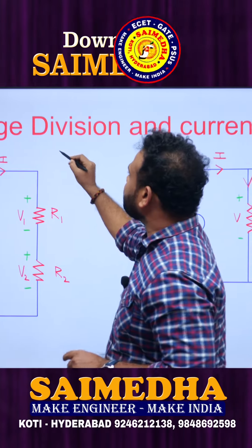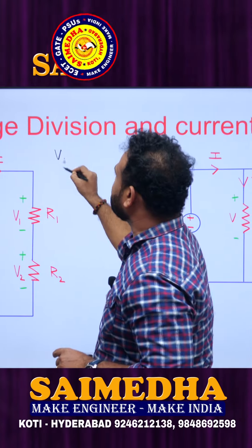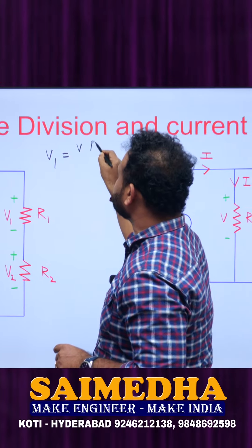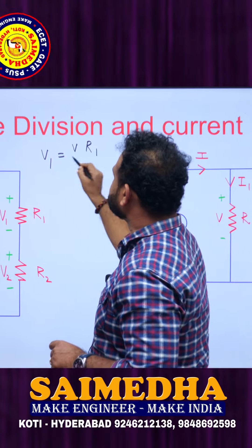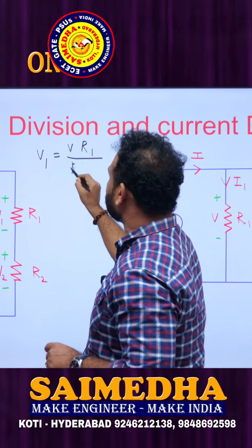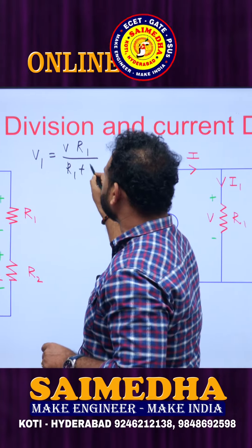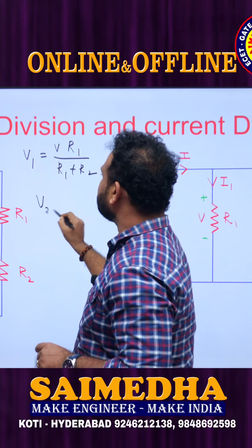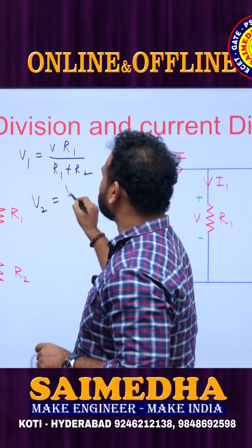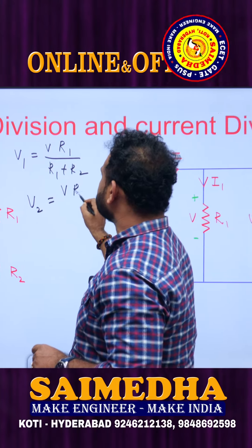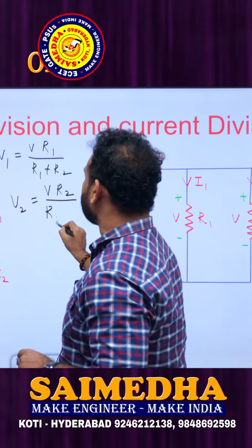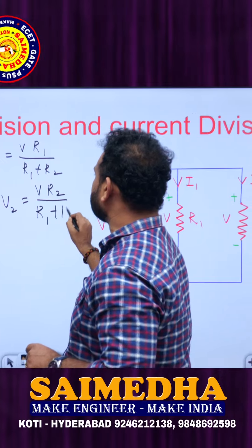The value of V1 voltage is equal to the total voltage multiplied by R1 upon R1 plus R2. Similarly, V2 is equal to the total voltage multiplied by R2 upon R1 plus R2.